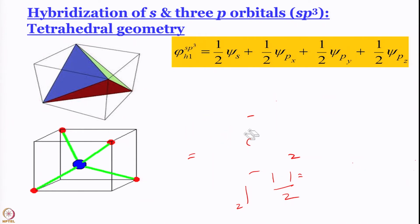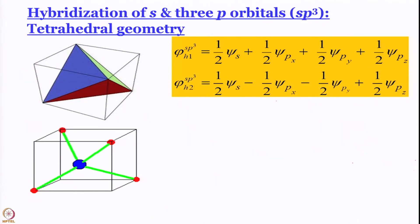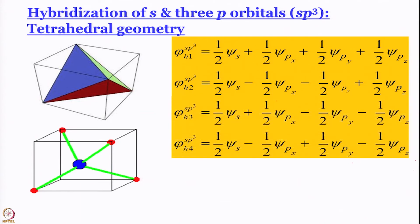We have constructed these wave functions under constraints: equal contribution from each p orbital, normalization, and mutual orthogonality. This leads to the conclusion that in each hybrid orbital, two p orbital coefficients must be −½ and the third is +½. This gives us the complete orthonormal set of hybrid wave functions.